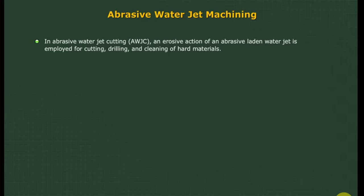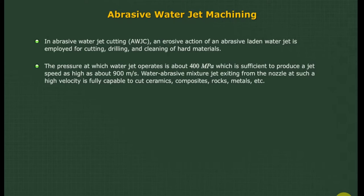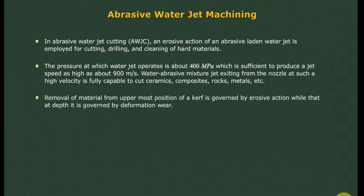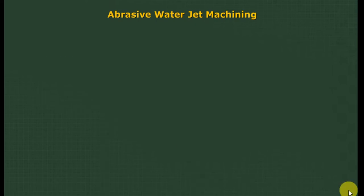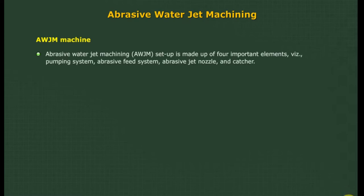In abrasive water jet cutting (AWJC), the erosive action of an abrasive-laden water jet is employed for cutting, drilling, and cleaning of hard materials. The pressure at which the water jet operates is about 400 MPa, which produces a jet speed as high as about 900 m/s. The water-abrasive mixture jet exiting from the nozzle at such high velocity is fully capable of cutting ceramics, composites, rocks, and metals. Material removal from the uppermost position is governed by erosive action, while at depth it is governed by deformation wear.